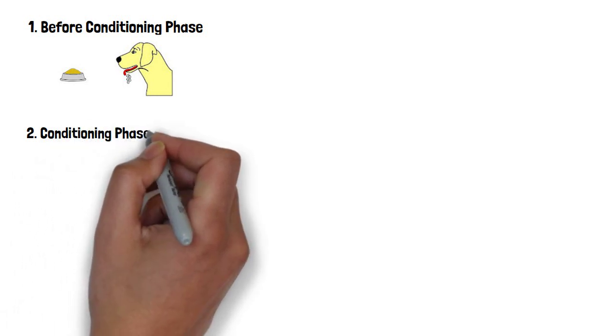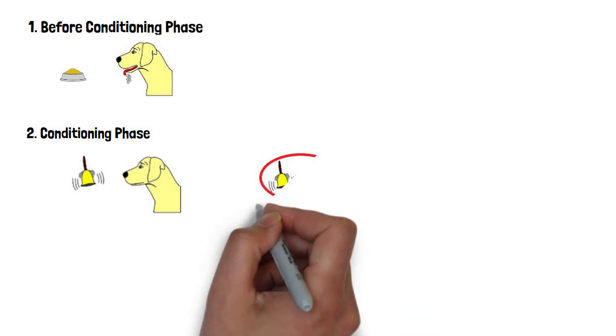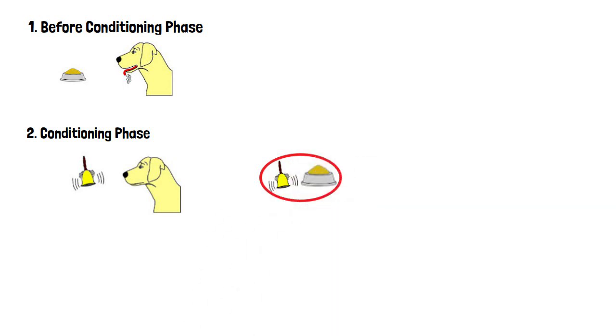2. The conditioning phase. A neutral stimulus is introduced repeatedly, paired with an unconditioned stimulus. Eventually, the neutral stimulus becomes the conditioned stimulus. The bell is repeatedly introduced with the food.